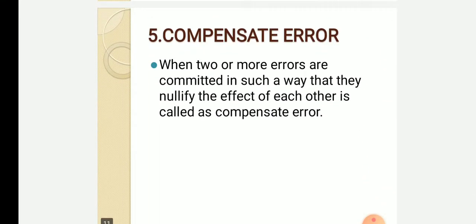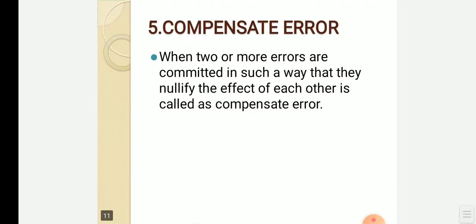Compensate error — for example, if two friends have the same name and you want to send money but it is sent to the wrong account, and another entry also has an error, they nullify the effect of each other. That is called a compensate error.